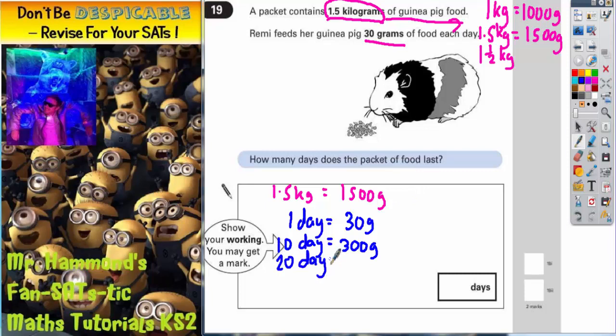20 days would be an extra 300 grams on top of this. So that would be 600 grams. 30 days would be an extra 300 which would be 900 grams. 40 days would be an extra 300 grams. So that would be 1,200 grams. And 50 days would be an extra 300 again which would be 1,500 grams.